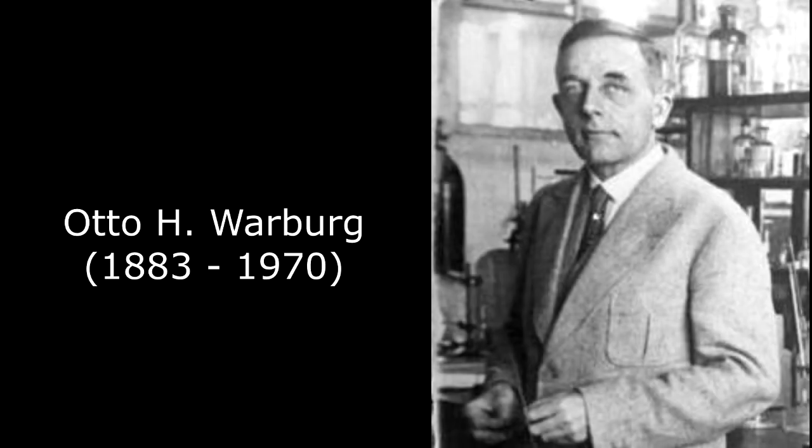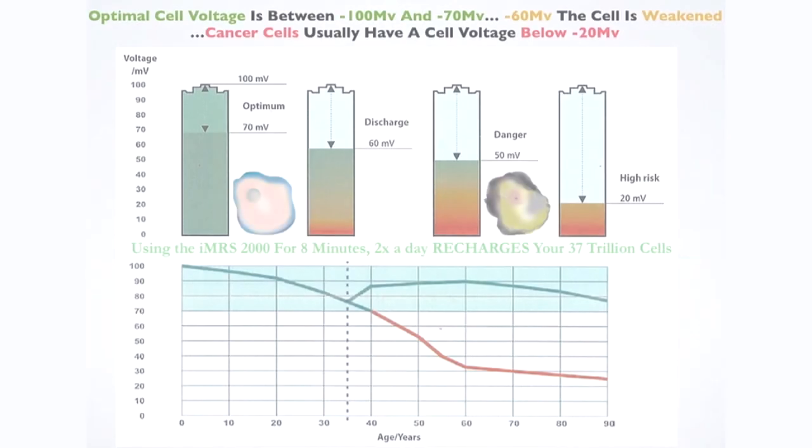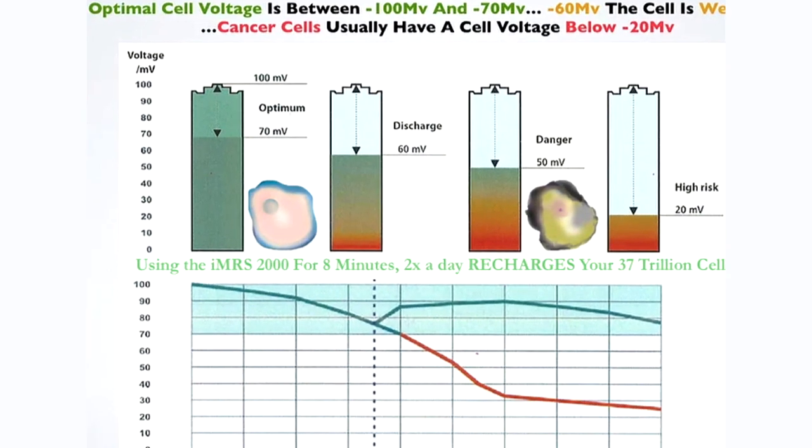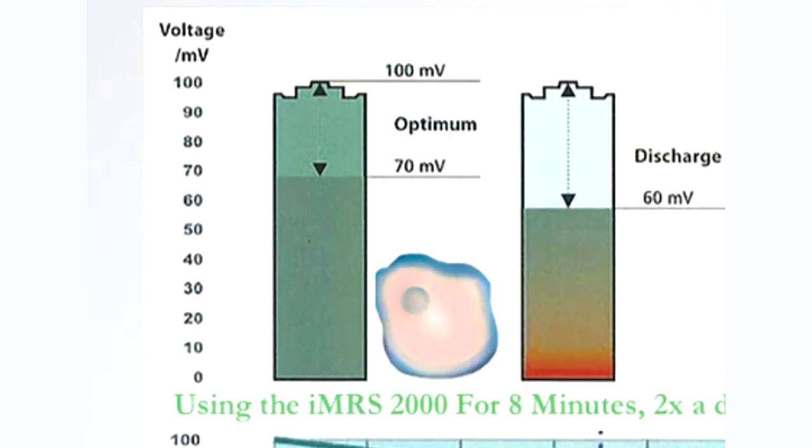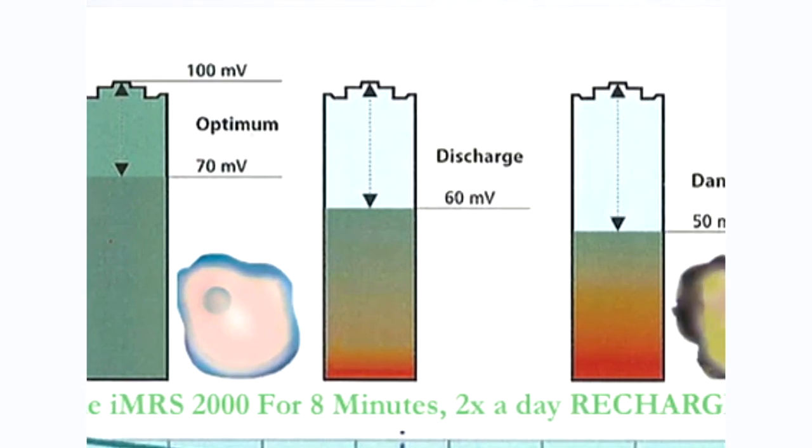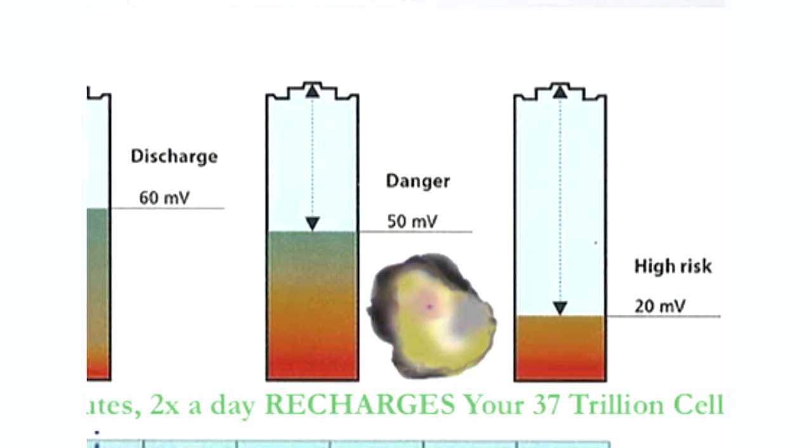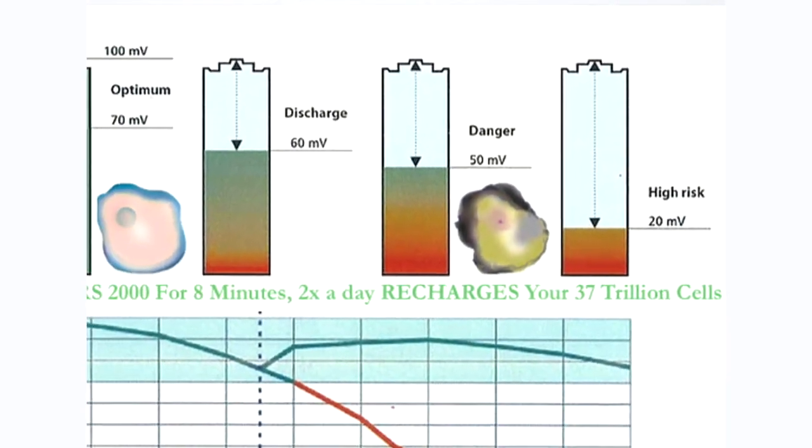Dr. Otto Warburg is one of the first to show that when our cellular voltage starts to drop, our health starts to drop and we get sicker and sicker as the voltage gets lower and lower to the point that if our cell voltage drops below 15 or 20 millivolts, we can get cancer or some serious illness.